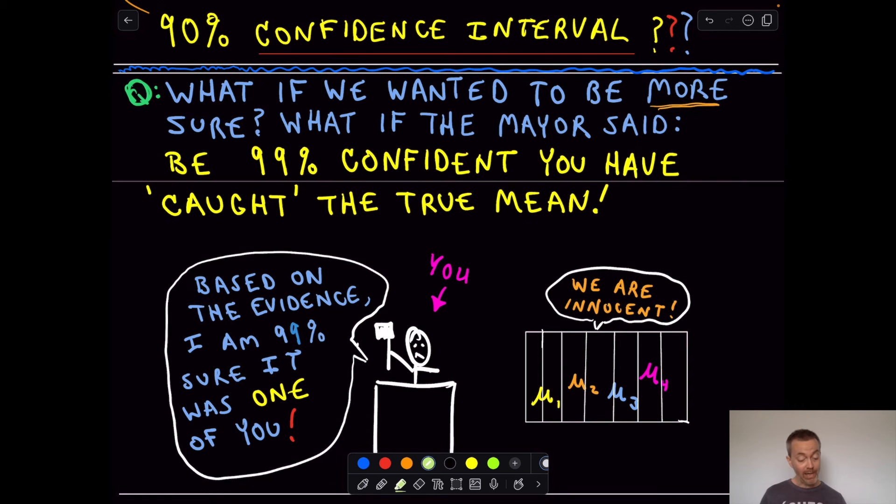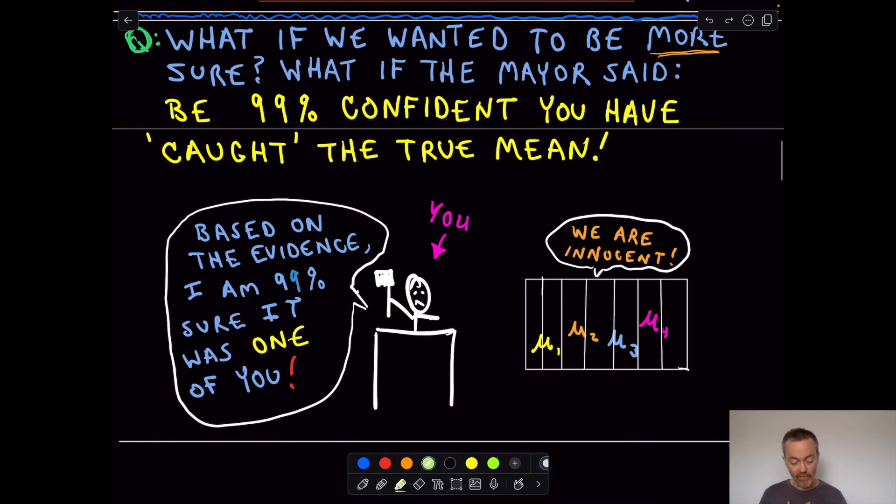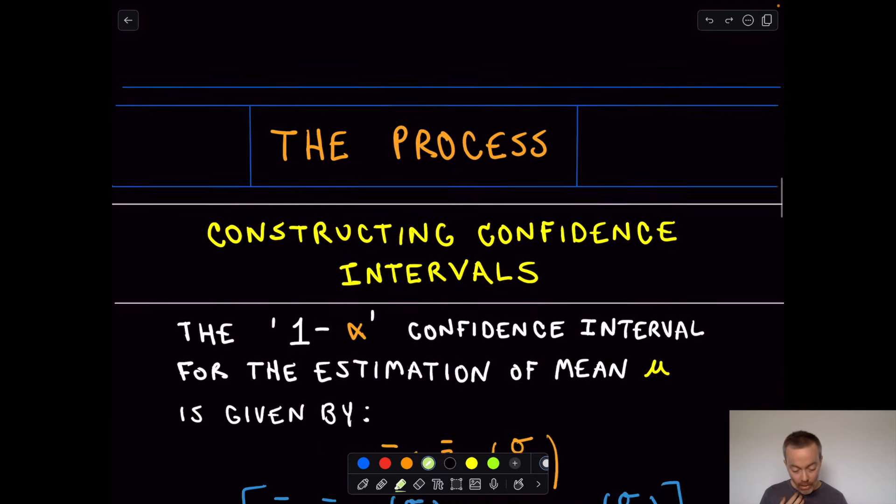Okay. One thing I want to point out, we're never positive that we know the true average commute time. We can only be confident up to a certain amount. And we get to specify that amount. You know, if you need to be real sure, well, then you would use, you know, you would want to be 99% confident. Maybe if it's not so important, eh, 90% confidence works.